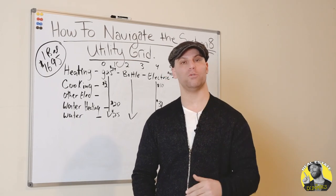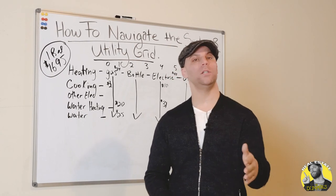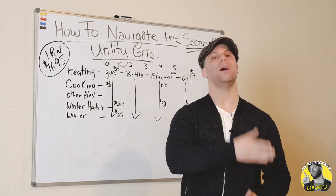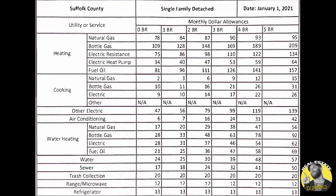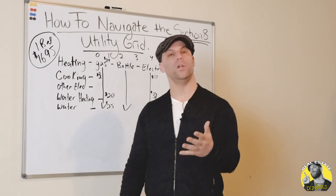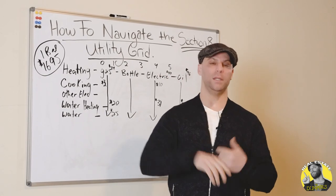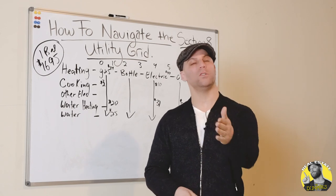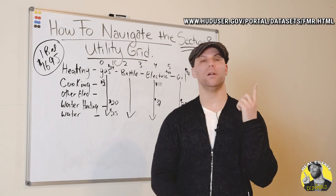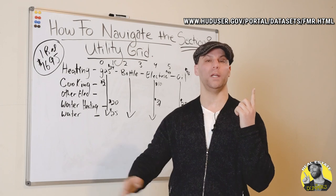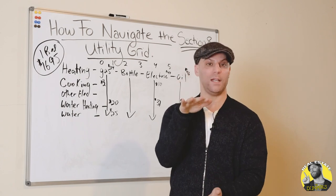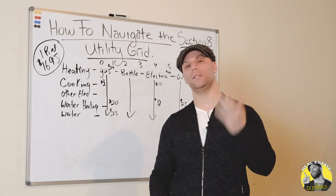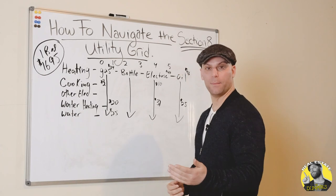From that you have to subtract your utilities. The utilities you subtract to get your net number depends on the types of utilities you have — that's why it's very important to understand the grid. You reach out to the different programs and ask them to send you their sheet for FMR. You can also find FMR on the HUD website, which shows you throughout the entire country what the fair market rent is for your county. Then the program will send you the utility sheet which tells you exactly what they're going to deduct from the particular apartment size.